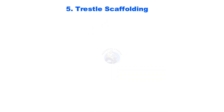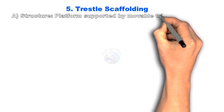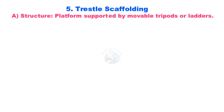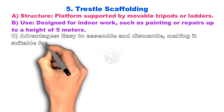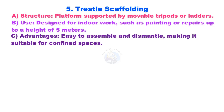Trestle Scaffolding. The platform is supported by movable tripods or ladders. It is designed for indoor work such as painting or repairs, up to a height of 5 meters. It is easy to assemble and dismantle, making it suitable for confined spaces.